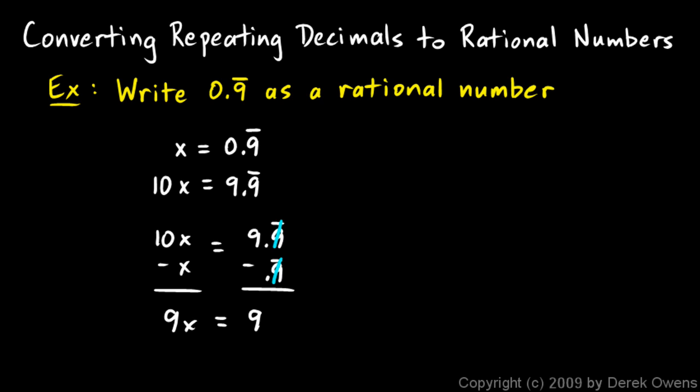So 9x on the left equals 9 on the right. Saying 9x equals 9 is the same as saying x equals 1. And that's our answer. And a lot of people find that result a little bit surprising. Because we started off with x equals 0.9 repeating. And that's the same as saying it's 0.99999 and so on. Those 9's go on forever.